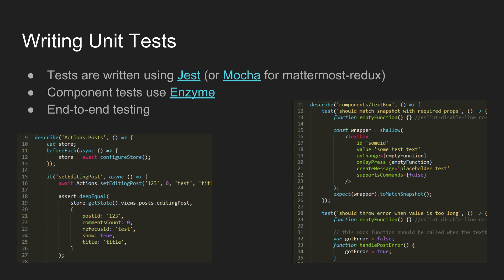There are also component tests, which use Enzyme to render React components and compare them to stored snapshots checked into the repository. The first time you write a snapshot test it just generates the snapshots; after that it compares back against them to detect changes — if things change, the test will fail. To update snapshots, use yarn test -u. We also have some end-to-end testing that renders the whole page, connects to the server, and makes sure everything works — those are currently in progress.